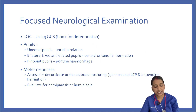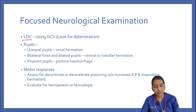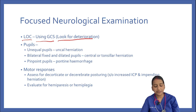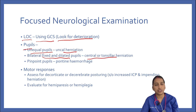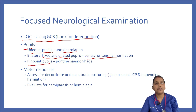A focused neurological examination in the emergency room looks for level of consciousness using the GCS scale, monitoring for deterioration. Regarding pupils, we look for unequal pupils which can be seen in uncal herniation, bilateral fixed dilated pupils seen in central or tonsillar herniation, and pinpoint pupils which may indicate pontine hemorrhage.